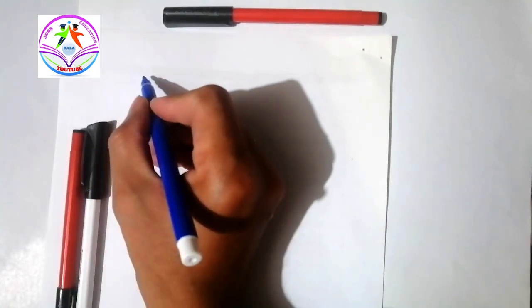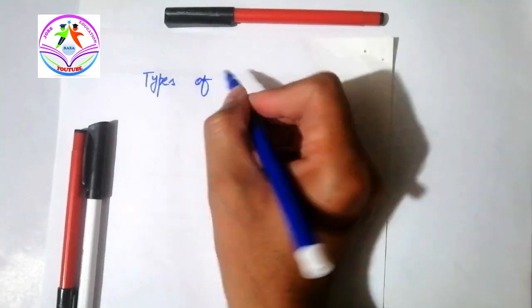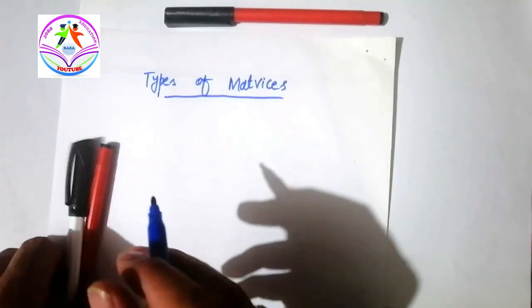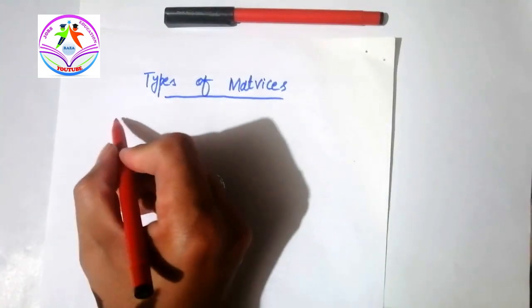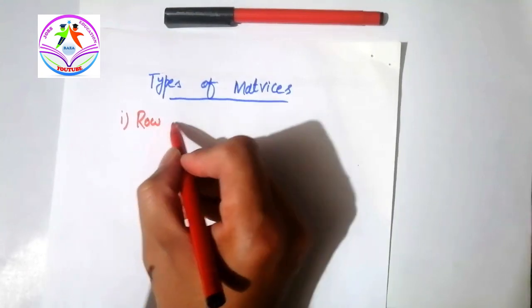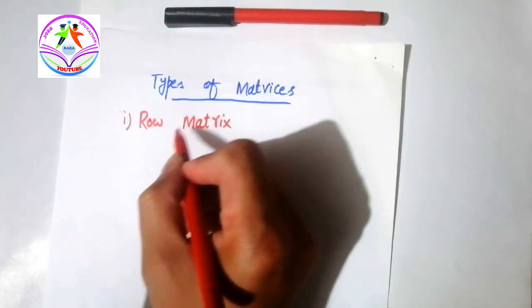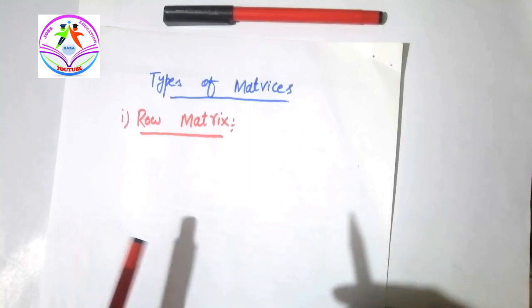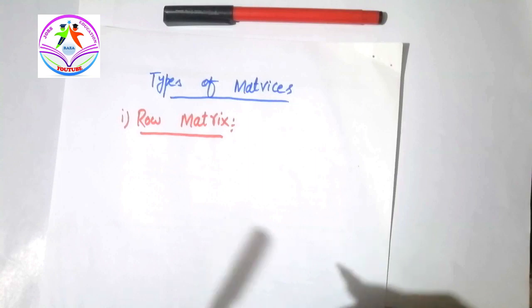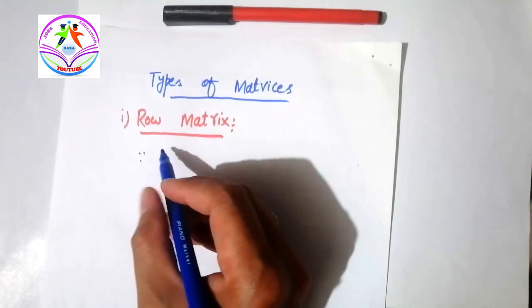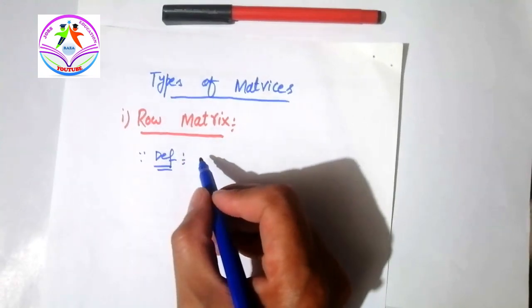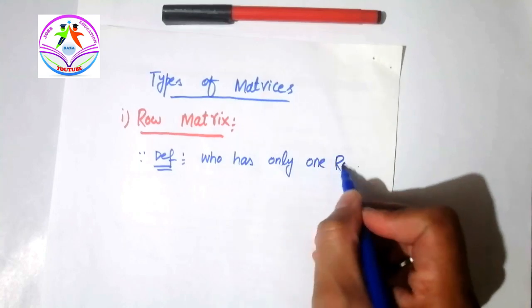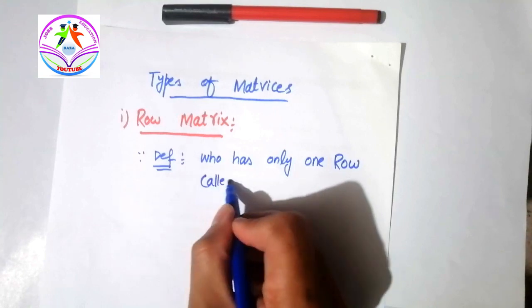Our topic is types of matrices. The first type is row matrix. The definition of row matrix is: the matrix which has only one row is called a row matrix. In other words, a matrix is called a row matrix if it has only one row.